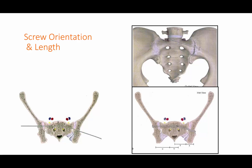A few words about screw orientation. If you have a vertical sacral fracture, it can be preferable to place the screw perpendicular to it. Whereas if you have an SI joint dislocation, with the SI joints oriented a certain way, it may be more preferable to have a screw oriented differently.